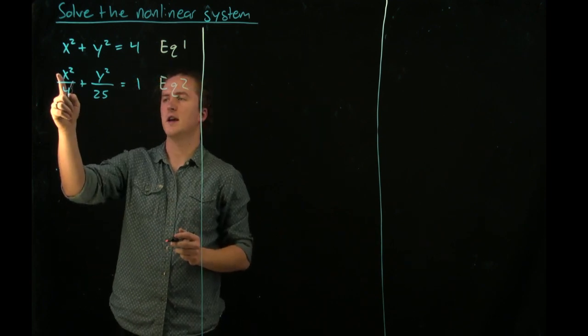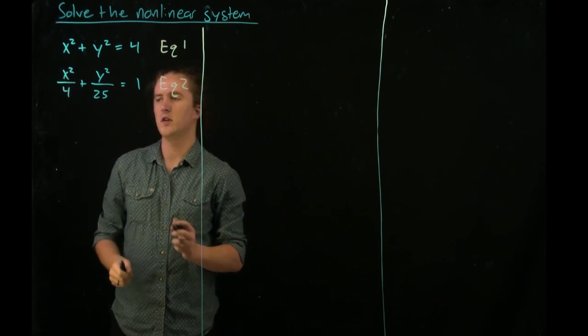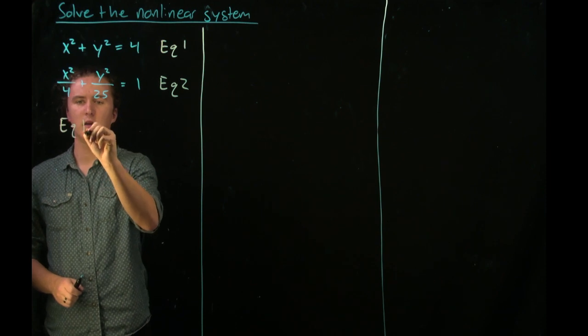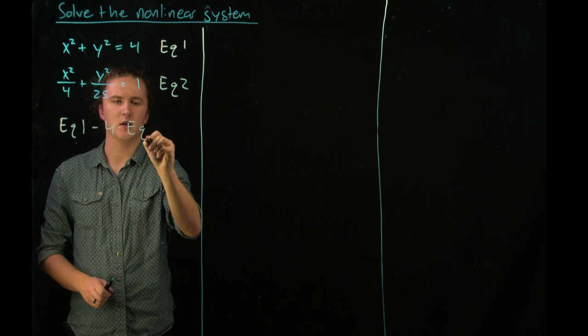If we want to get rid of the x squareds, we would need to find equation 1 minus 4 times equation 2.